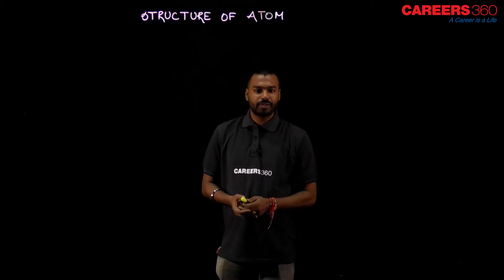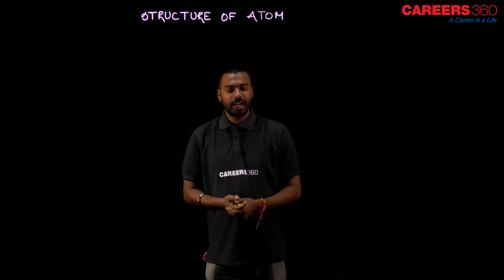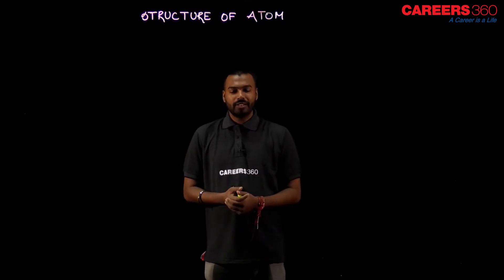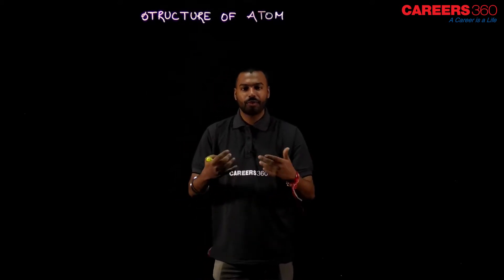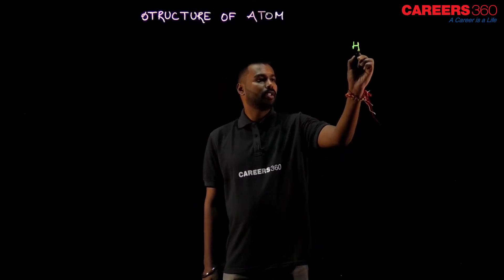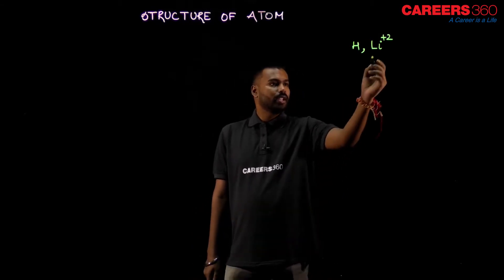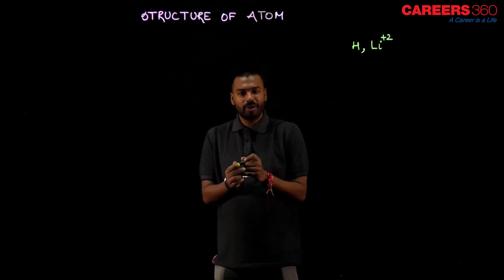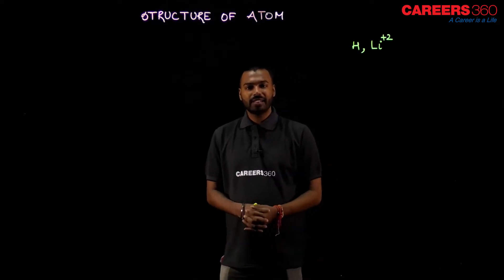Let's start with Bohr's postulate — what are the important points and how he introduces the atomic model. Point 1: Bohr's atomic model is only applicable for uni-electronic species. 'Uni' means 1, electronic means electron — like hydrogen, which has 1 electron. For example, Li²⁺ originally had 3 electrons; with 2 removed, 1 electron is left. So Bohr's atomic model is only applicable for species which has only one electron.